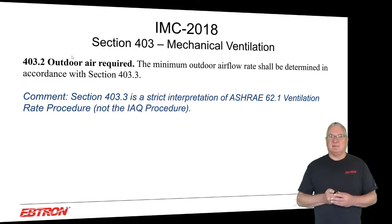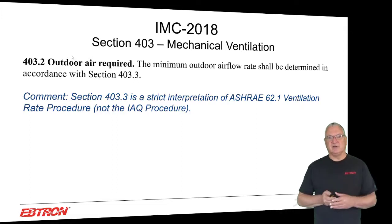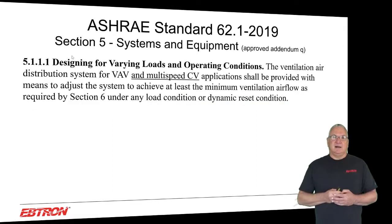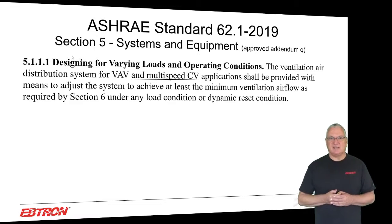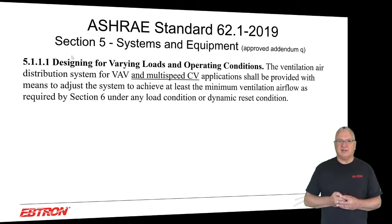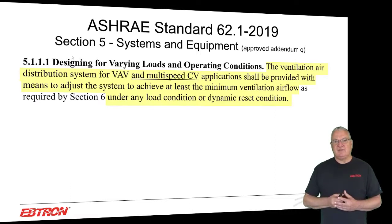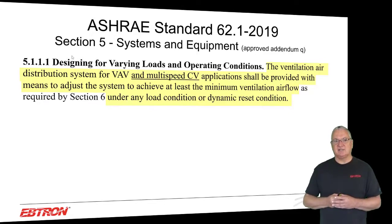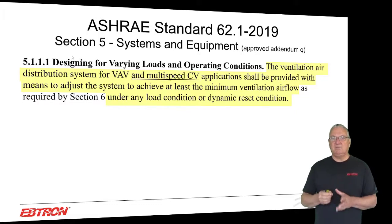I want to make sure everybody understands that, because I have people saying they don't care about Standard 62. Well, you should care about Standard 62 because it's really what your code is based on. Within the last several years, Addendum Q approved one significant change. The ventilation air distribution for VAV and multi-speed constant volume applications shall be provided with means to adjust the system to achieve at least the minimum ventilation airflow under any load condition or dynamic reset condition. It had always only been VAV.